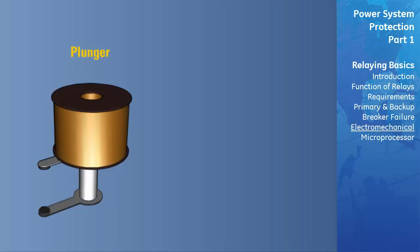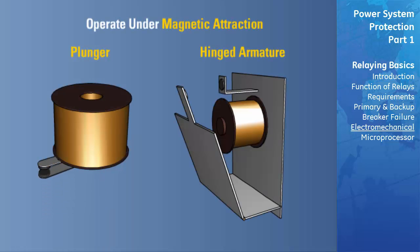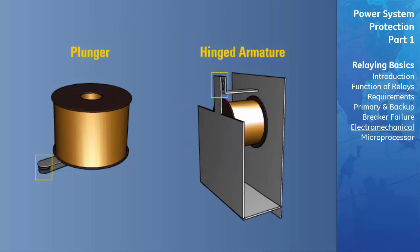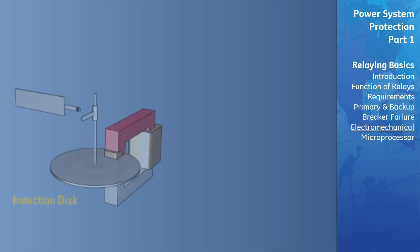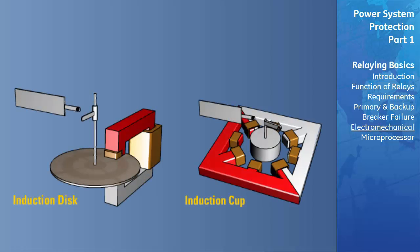The plunger and hinged armature operate under the principle of magnetic attraction. The armature is attracted into a coil or to the pole face of an electromagnet. This principle works with either alternating or direct current measured quantities. The induction disc and induction cup work under the principle of magnetic induction. Torque is developed in a movable rotor in the same way that it is produced in an induction motor, which means that they can only be used with alternating current measured quantities.